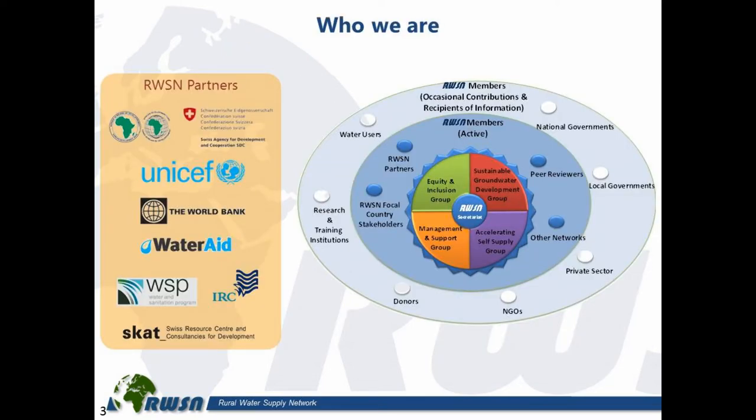In terms of who we are as a network, we have a secretariat of two and a half people here at SCAT. Our main partners on the executive steering board include the African Development Bank, SDC, UNICEF, World Bank, WaterAid, WSP, IRC, and SCAT. We also have a range of active members around the world — a mixture of national governments, private sector, NGOs, and academics.